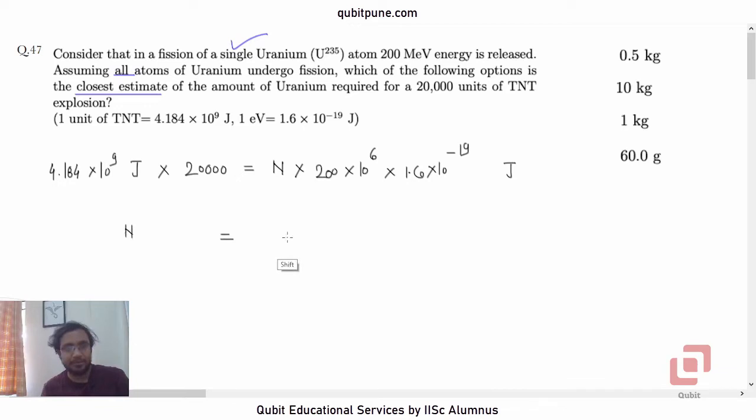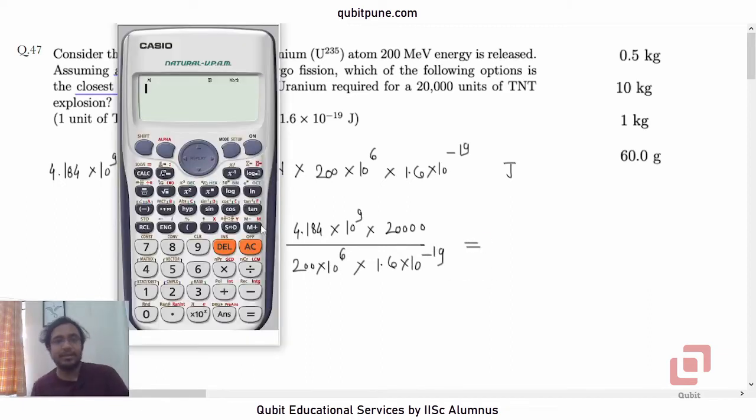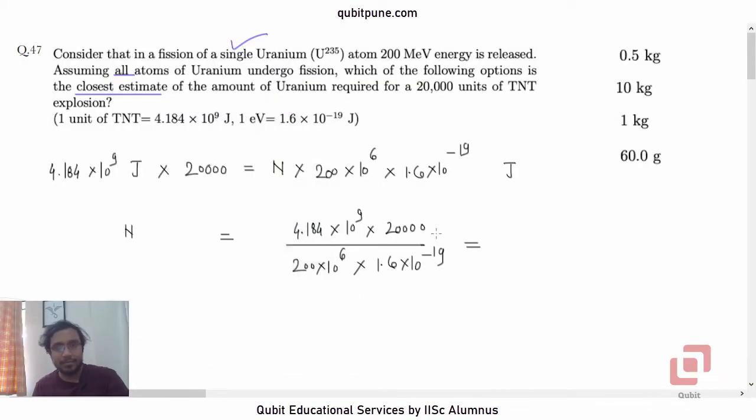So what will be N now? N is equal to 4.184 × 10^9 × 20,000 upon 200 × 10^6 × 1.6 × 10^-19. Let us calculate this now. 4.184 × 10^9 × 20,000 upon 200 × 10^6 × 1.6 × 10^-19, that is 2.615 × 10^24. So these are the number of atoms.